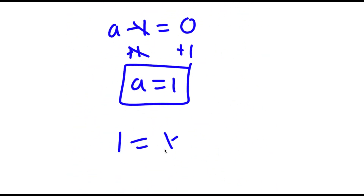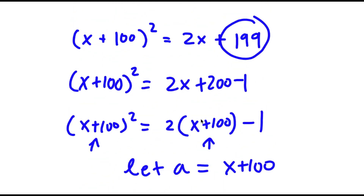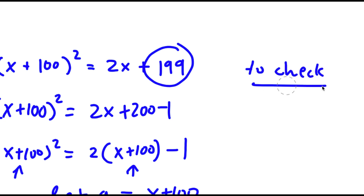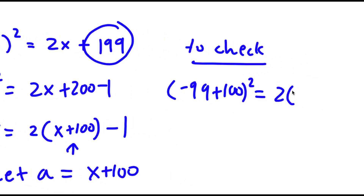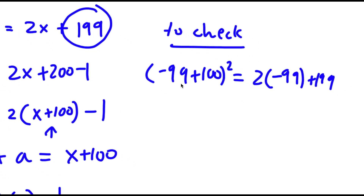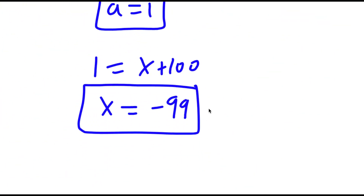Now, remember how we set a equal to x plus 100. So this means that 1 is equal to x plus 100, and x is equal to negative 99. So now I have to check. By plugging negative 99 into my original equation, I get negative 99 plus 100 squared is equal to 2 times negative 99 plus 199. Negative 99 plus 100 is 1, and 1 squared is 1. So I have 1 is equal to negative 198 plus 199, which is 1. So I get 1 is equal to 1, confirming my solution is correct.